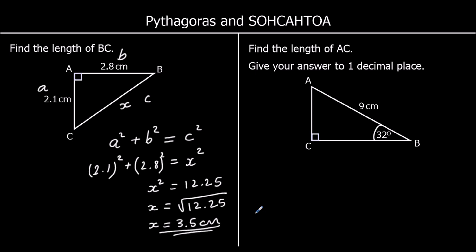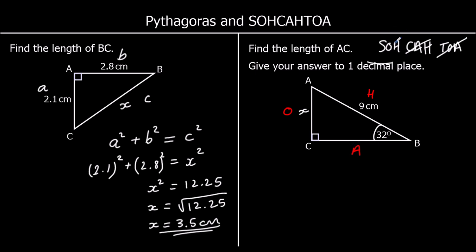Question two: find the length of AC, giving your answer to one decimal place. AC is this length between A and C. We can't use Pythagoras because we don't know both of the other two sides, but we know an angle, so we can use SOHCAHTOA. Label the triangle: the hypotenuse is the longest side opposite the right angle; the opposite is opposite the angle we're using; the adjacent is in between the angle and the right angle. We want O and H — O is x, H is 9, and A is not in the question — so it's SOH, meaning sin(angle) = O ÷ H.